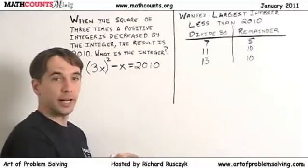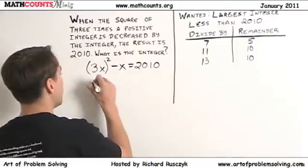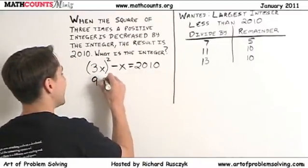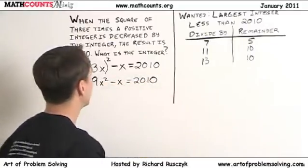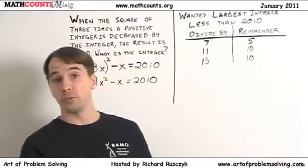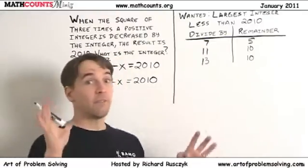All right, let's square that out. Take 3x squared, you get 3 squared times x squared, and that's 9x² minus x is 2010. Now maybe you know the quadratic formula. Maybe you know how to factor quadratics.